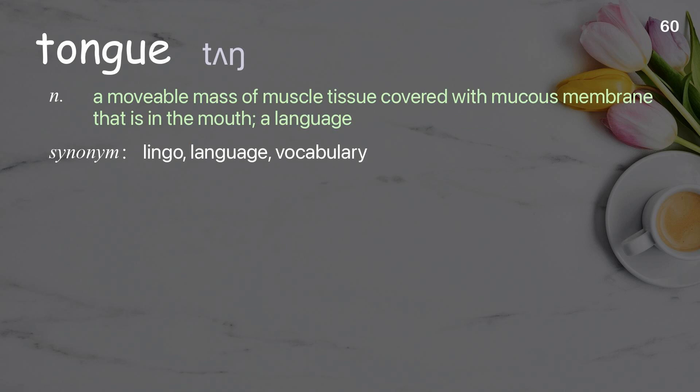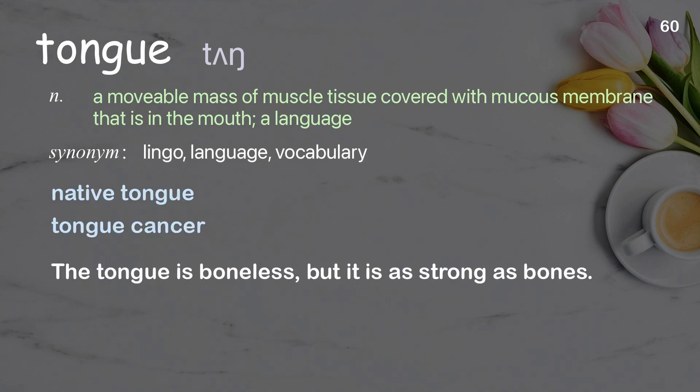Tongue: a movable mass of muscle tissue covered with mucous membrane that is in the mouth; a language. Examples: native tongue; tongue cancer. The tongue is boneless, but it is as strong as bones.